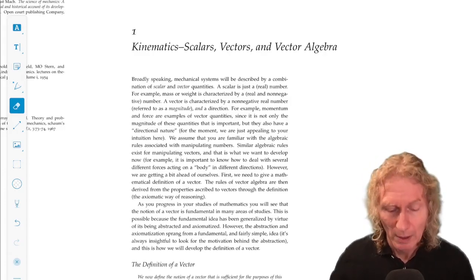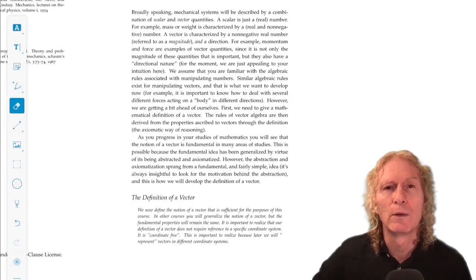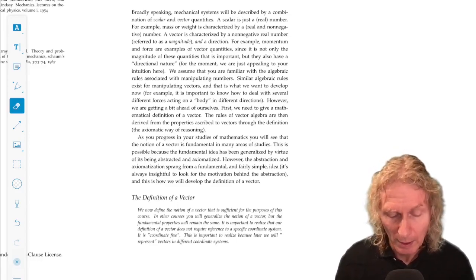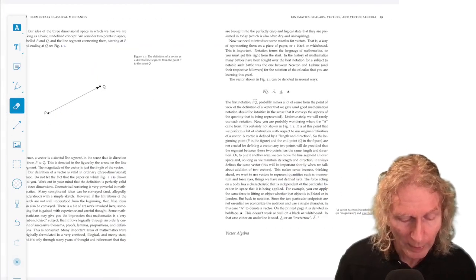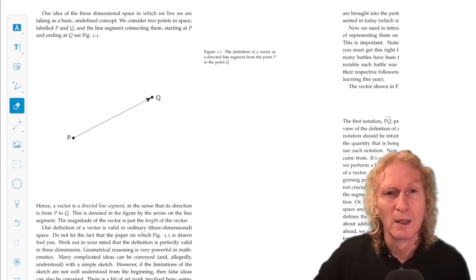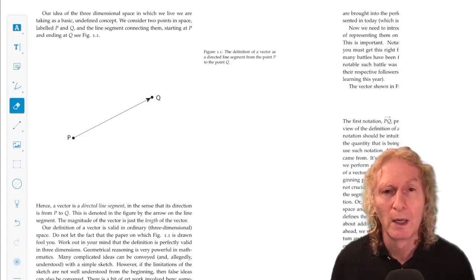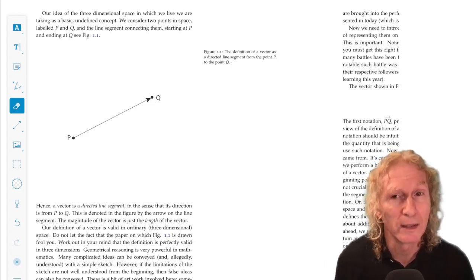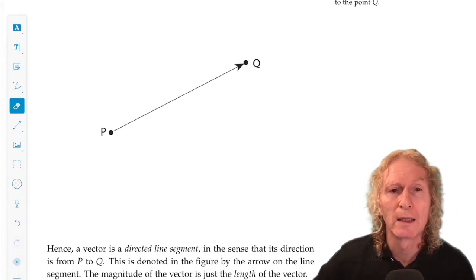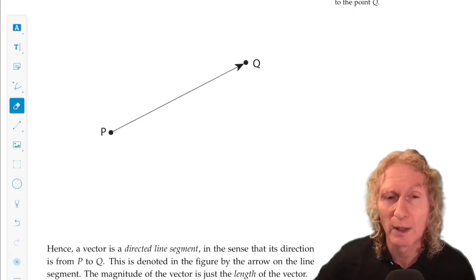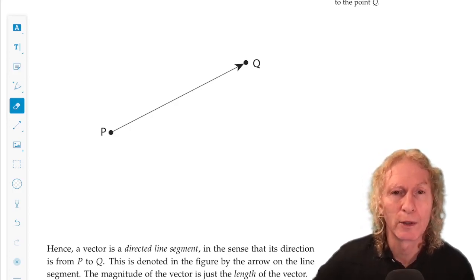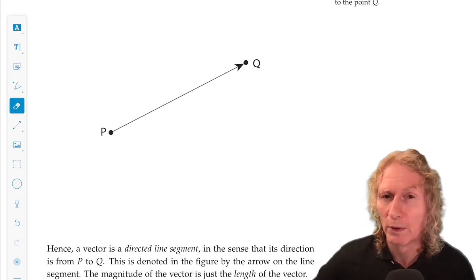So what is a vector? For us, our notion of space that we live in is going to be a primitive, undefined concept. So a vector is a directed line segment. So if you think about that, that means with that definition, it has two characteristics, a direction and a length. So in space, let's take two points, P and Q, and let's look at the line segment from P to Q. And that's a vector. The length or magnitude and the direction is what's important in this definition.